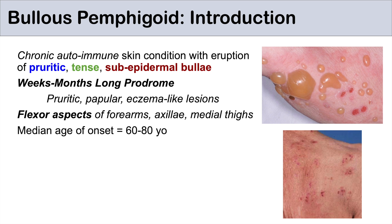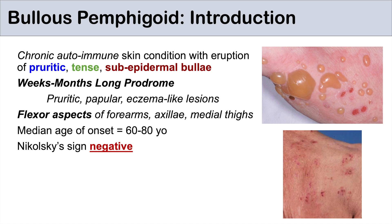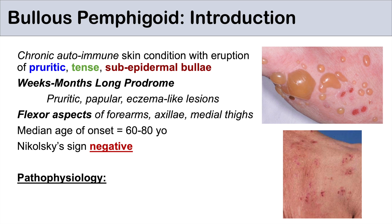The median age of onset of bullous pemphigoid is an older individual, around 60 to 80 years old. With this condition, the Nikolsky sign is negative — if you try to apply pressure to one of these bullae, they're not going to erupt because they are tense bullae. And they're tense because of the pathophysiology of this condition.